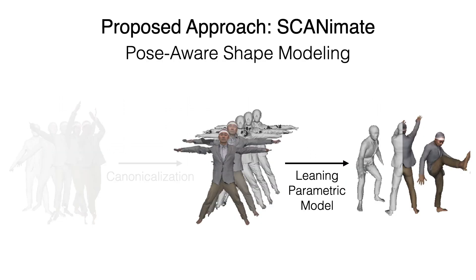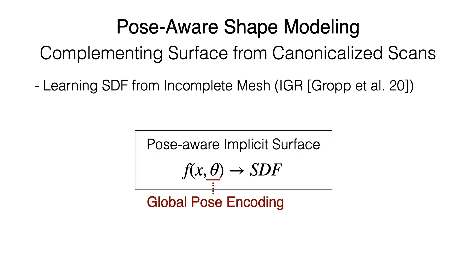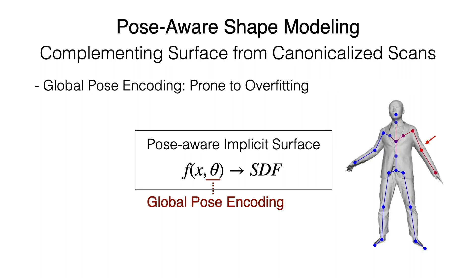Next, I will explain how to learn a parametric clothed avatar from the canonicalized scans. To complete the missing regions in each scan, we jointly learn signed distance fields from incomplete meshes. To make the implicit surface pose-aware, we condition the implicit function with the global pose encoding. However, we found that global pose encoding is prone to overfitting.